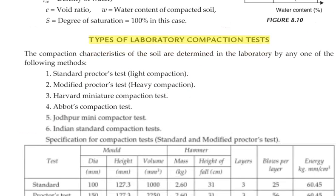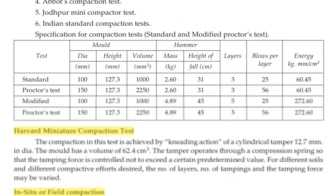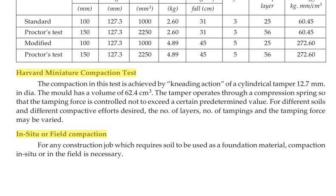Next we are going to see the types of laboratory compaction tests. Several tests are available: Standard Proctor Test for light compaction, Modified Proctor Test for heavy compaction, Harvard Miniature Compaction Test, Abbot's Compaction Test, Jodhpur Mini Compaction Test, and Indian Standard Compaction Test. The Harvard Miniature Compaction Test is achieved by the kneading action of a cylindrical tamper 12.7 mm in diameter. The mold has a volume of 62.4 cm³. The tamper operates through a compression spring so that the tamping force is controlled. The number of layers, number of tampings, and tamping force may be varied.